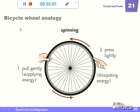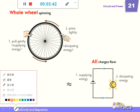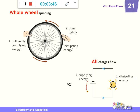This is an analogy. For example, pull gently to let it rotate — that means you supply energy. On the other hand, just put a finger on it to feel friction — then it will be dissipating energy. Inside the actual circuit, it is exactly the same: we have the energy provider, which will be the battery, and the light bulb will consume energy.